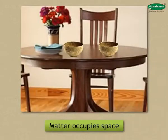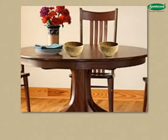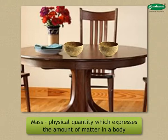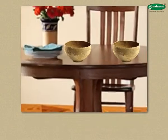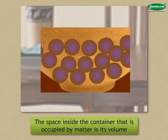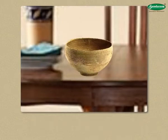Matter occupies space. Two objects cannot occupy the same space at the same time. The mass of an object gives an indication of the amount of matter it contains. Mass is a physical quantity which expresses the amount of matter in a body. The space inside a container that is occupied by matter is its volume.